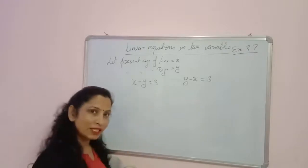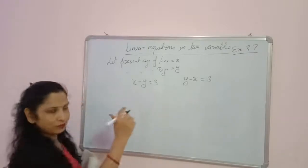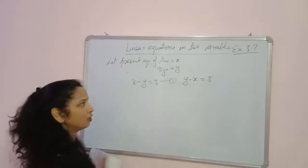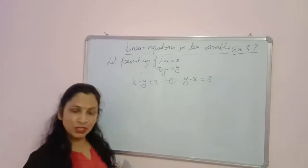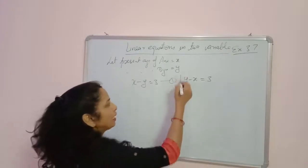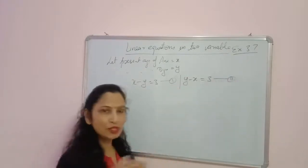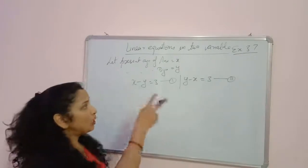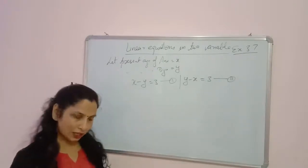If Ani is bigger than Biju, then x minus y equals 3. This is one equation. Or Biju can be bigger than Ani, so y minus x equals 3. Both equations are correct and we have to solve both with the other equation.